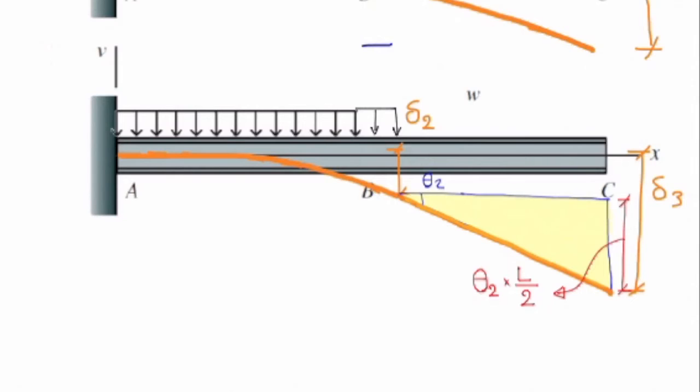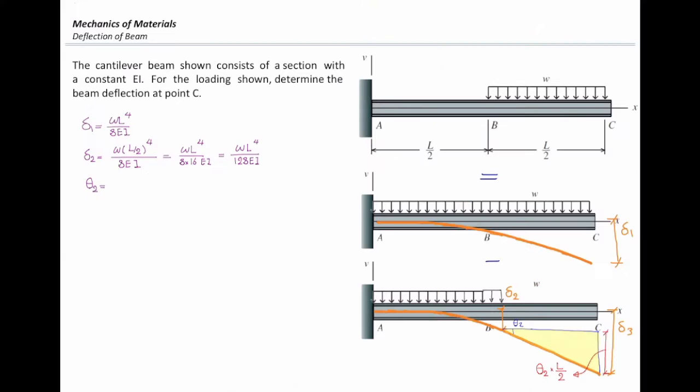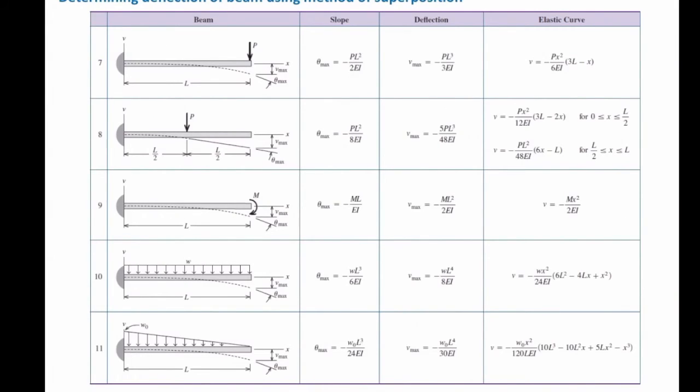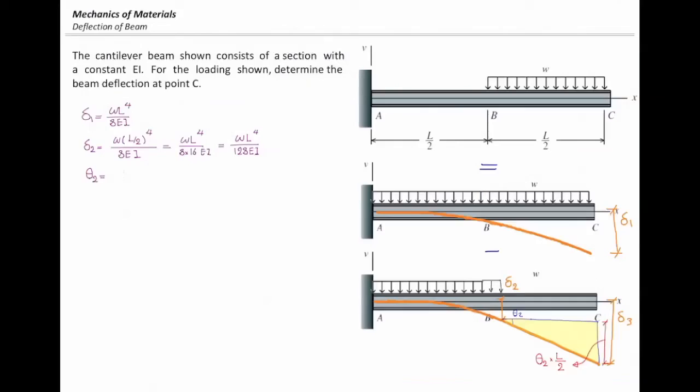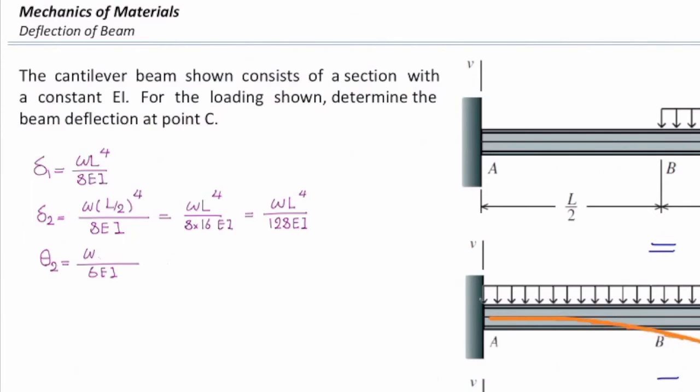All right. So first, let's determine how much is theta 2. To determine theta 2, I will go to the table. Here in this table, I use figure number 10, and I will pick up theta from that equation, from that table. So that would be W over 6EI times L cubed. But again, here L would be half of the length. So that is L over 2 cubed. And that would be WL cubed over 48EI.